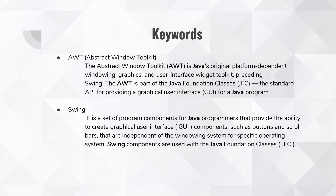The first keyword is AWT, that is Abstract Window Toolkit. The Abstract Window Toolkit is Java's original platform-dependent windowing, graphics, and user interface widget toolkit, preceding Swing. The AWT is a part of Java Foundation Classes, the standard API for providing a graphical user interface for Java programs. So what this exactly means is, you have developed a program and you want to add some graphical interface to it — to do that, we use AWT.